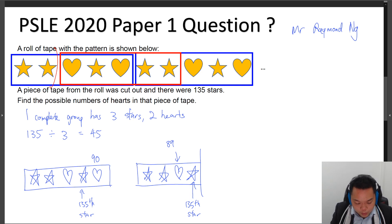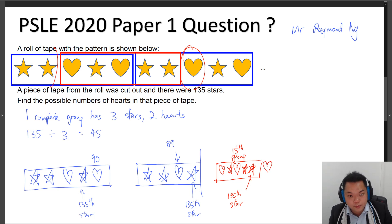You would still have two stars, two hearts, and three stars, correct? But the next item here will be a heart over here after you've defined your sets in this manner. And this is your 45th complete group. This is your 135th star. The next item here will be a heart, so this would be the 91st star.